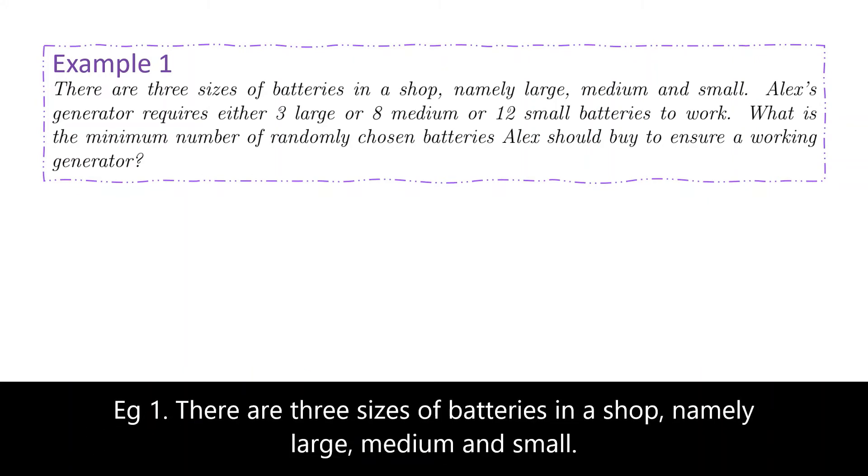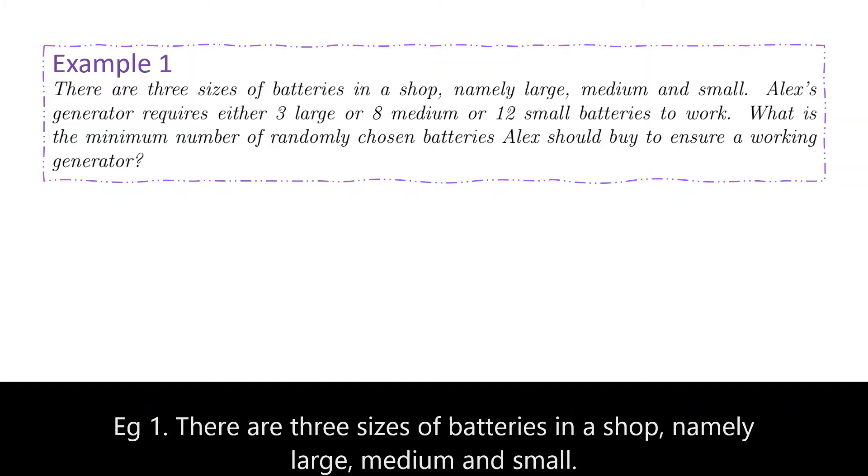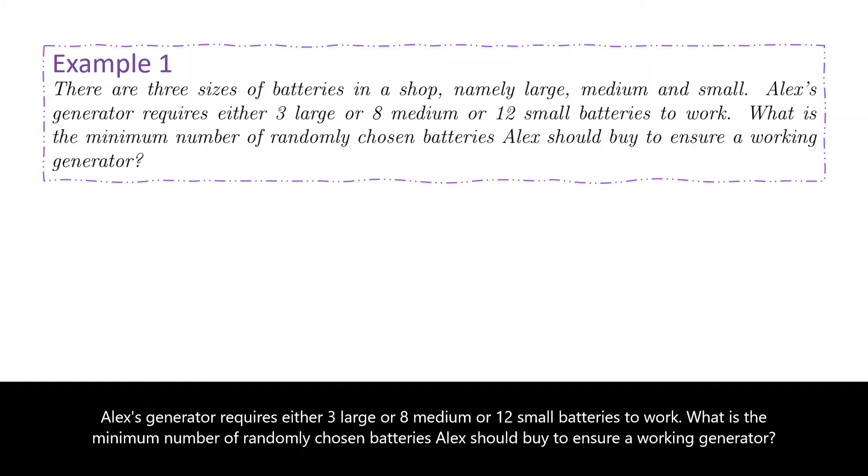Example 1. There are three sizes of batteries in a shop: large, medium, and small. An LX generator requires either 3 large, or 8 medium, or 12 small batteries to work. What is the minimum number of randomly chosen batteries LX should buy to ensure a working generator?